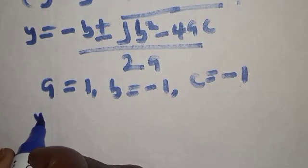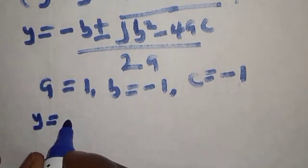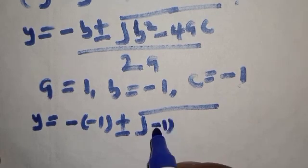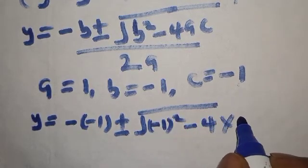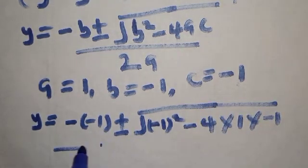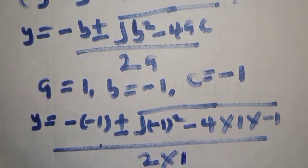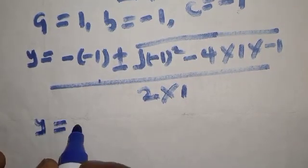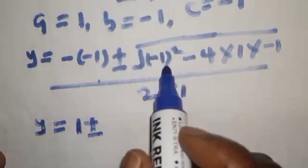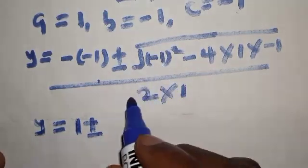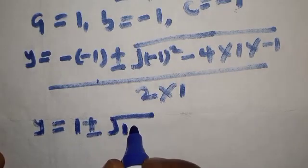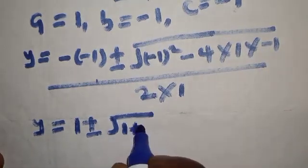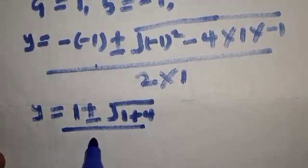Substituting, we get: y equals negative of negative 1, plus or minus the square root of negative 1 squared minus 4 times 1 times negative 1, all over 2 times 1. This simplifies to y equals 1 plus or minus the square root of 1 plus 4, which is the square root of 5, over 2.